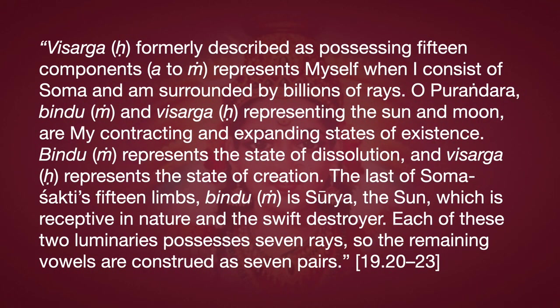Visarga, aha, formerly described as possessing fifteen components, ah to n, represents myself when I consist of soma and am surrounded by billions of rays. O purandhara, bindu, m, and visarga, aha, representing the sun and moon, are my contracting and expanding states of existence. Bindu, m, represents the state of dissolution and visarga, aha, represents the state of creation. The last of soma shakti's fifteen limbs, bindu, m, is surya, the sun, which is receptive in nature and the swift destroyer. Each of these two luminaries possesses seven rays, so the remaining vowels are construed as seven pairs.